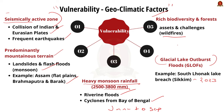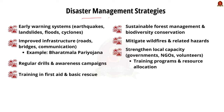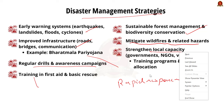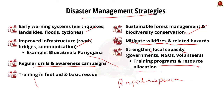Effective disaster management strategies for Northeastern India include: establishing robust early warning systems for earthquakes, landslides, floods, and cyclones to allow timely evacuation; improving infrastructure such as roads, bridges, and communication networks to facilitate rapid response — for example, implementation of the Bharatmala Pariyojana for road infrastructure; conducting regular drills and raising awareness about disaster risk, training local communities in first aid and basic rescue techniques; implementing sustainable forest management practices integrating biodiversity conservation with disaster risk reduction to mitigate wildfires; and strengthening the capacity of local governments, NGOs, and volunteers through training programs and resource allocation.